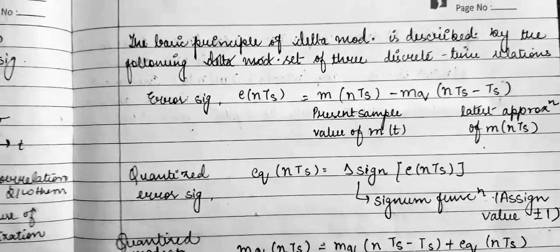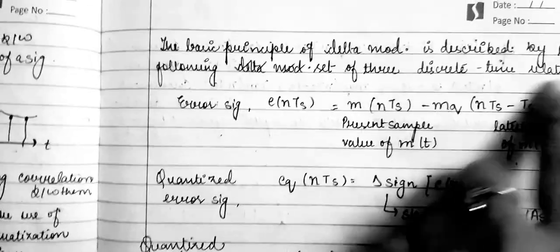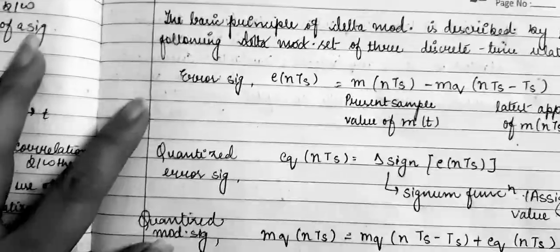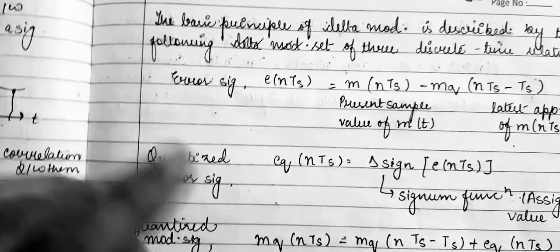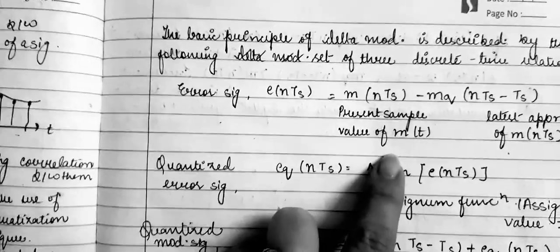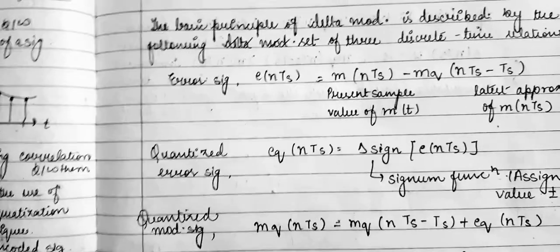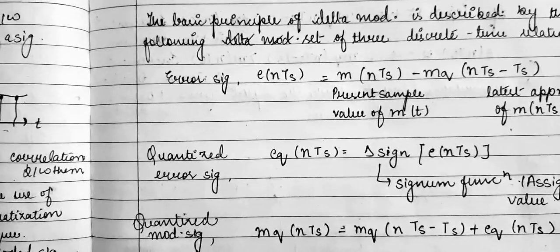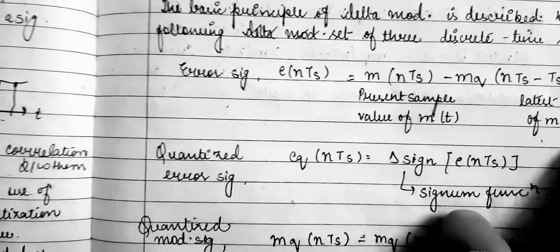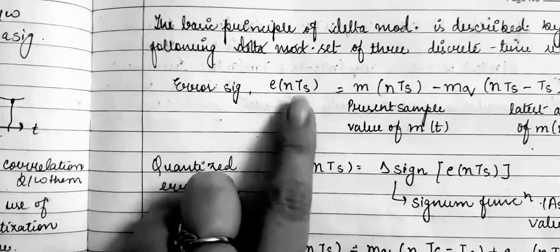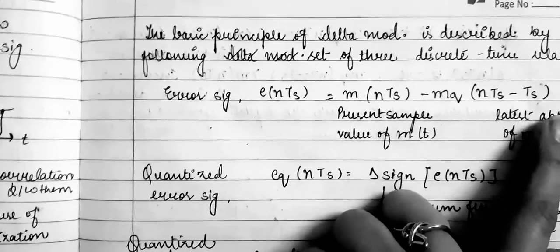We will discuss three discrete-time relations. The first one is your error signal. The error signal e(nTs) equals the difference between the present sample value of the modulating signal and the latest approximation sample version of the modulating signal: e(nTs) = m(nTs) minus mq(nTs minus Ts).